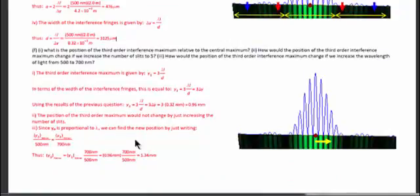The last question asks for the position of the third-order interference maximum relative to the central maximum. Using the equation y_n = nλL/d, for the third-order maximum we substitute n = 3: y₃ = 3λL/d. Since we already know λL/d, it's simply 3 times that value. Plugging in the numbers gives the position.